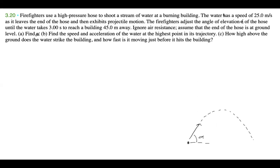So what we can do is start with a diagram and understand some of the information they gave us. We know the water has a speed of 25 meters per second as it leaves the hose and exhibits projectile motion. Starting at the tip of the hose, it's going to be at an angle of alpha and experience projectile motion. It takes three seconds to reach a building that's 45 meters away.